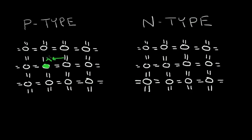When that happens, this hole will go away. The electron will jump over here, and the hole moves over to this location. So when I add this boron atom, the net charge of this region is neutral — the amount of positive charge equals the amount of negative charge. Adding this boron atom didn't upset the charge neutrality. Even though it had one less electron, it also had one less positive proton in the nucleus, so the charge remains in balance.